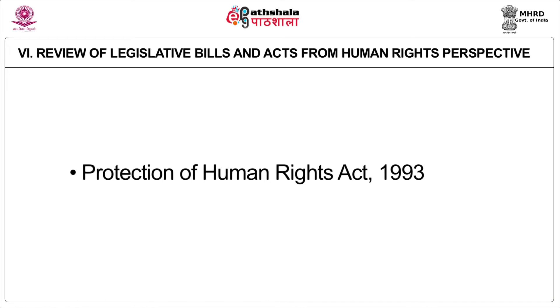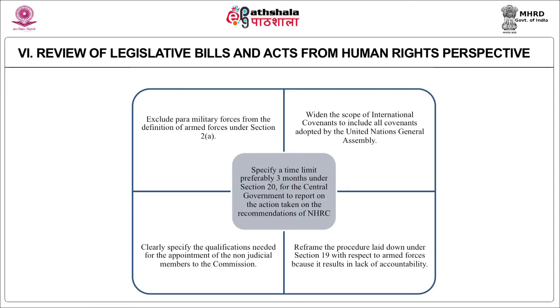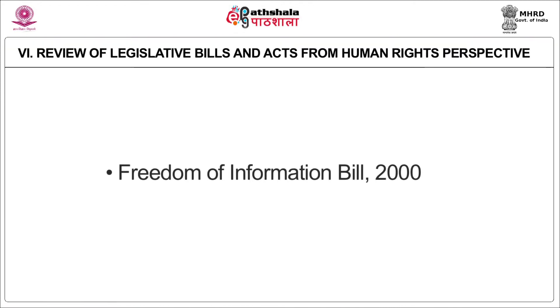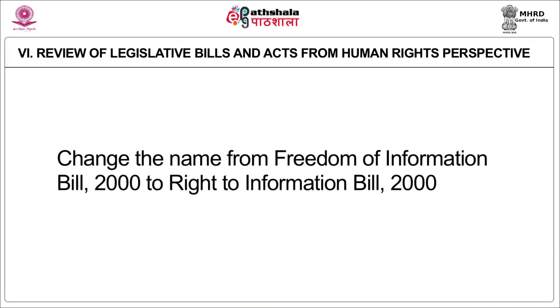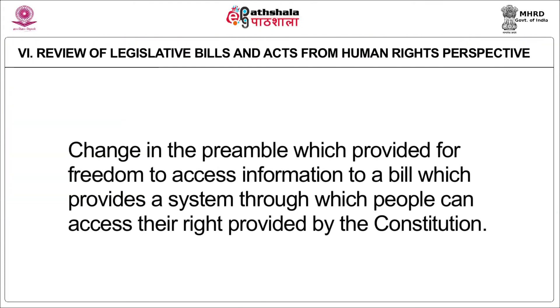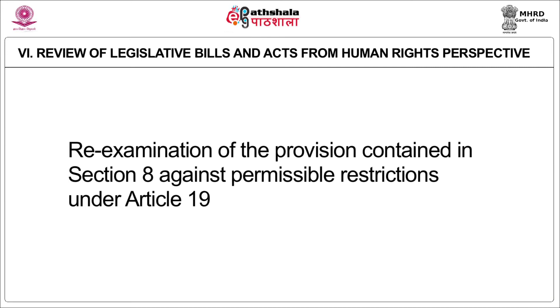Regarding the Protection of Human Rights Act 1993 itself, the commission requested former Chief Justice of India, Justice Ahmadi, to go into the act and suggest recommendations, and made a series of suggestions to the government for amendments. In the case of the Freedom of Information Bill, the commission examined it and asked the government to change the nomenclature to the Right to Information Bill. The commission recommended that the preamble be changed to provide for freedom to access information, and also recommended re-examination of the provisions contained in Section 8 against permissible restrictions under Article 19. These recommendations have since been accepted.